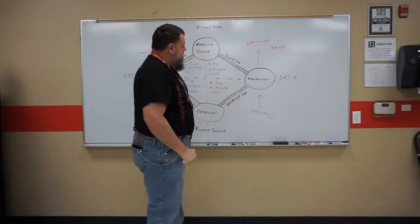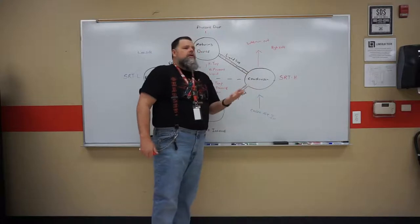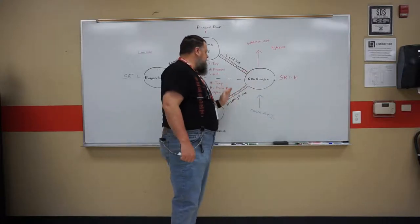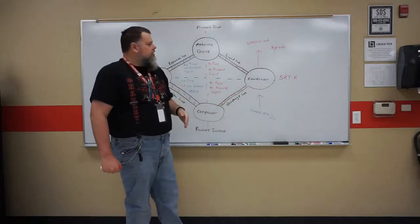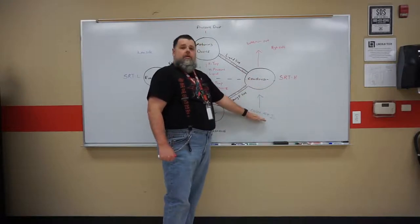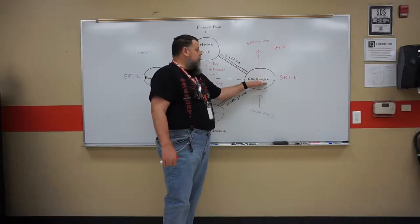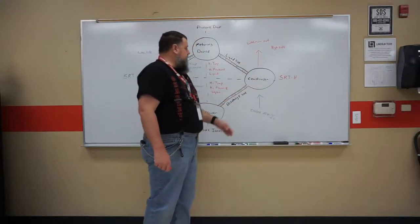So basically what that means is you've got cooler air that goes across this coil. Well, to cause a change of state, and that's what happens in the condenser when we go from a vapor to a liquid, what we need to do is a temperature difference. So the coil of the condenser is going to be warmer than the air going across it. So even if it's 100 degrees outside, the coil itself may be 120 degrees. And that's how we cause that change of state on the condenser.